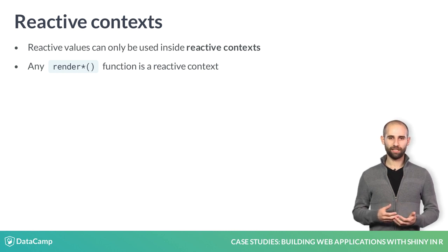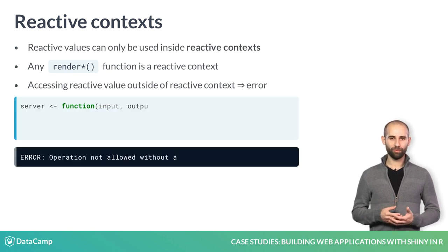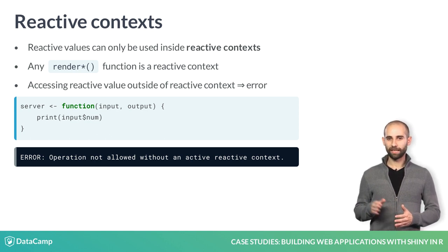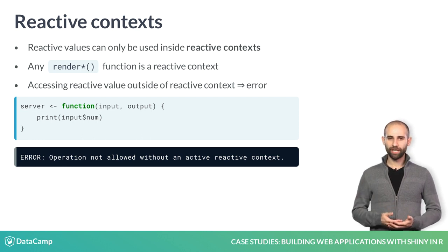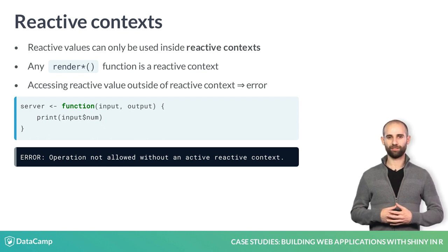If you try accessing a reactive value outside a reactive context, you will get an error. For example, suppose you try to print the value of input$num like this — Shiny will give you a helpful error message telling you that this cannot be done outside of a reactive context.